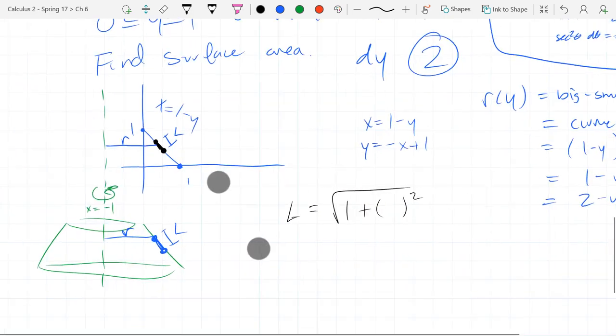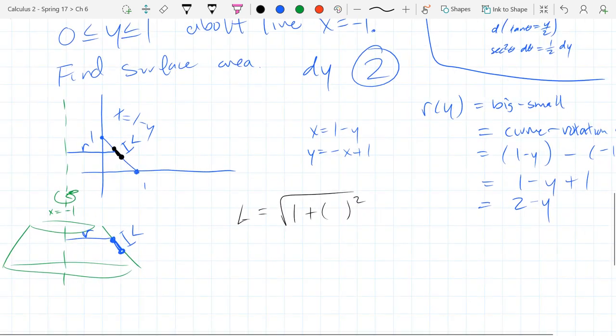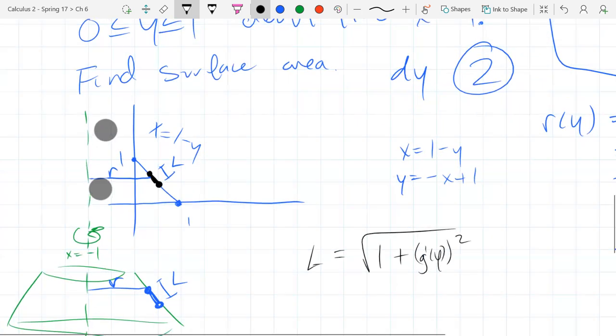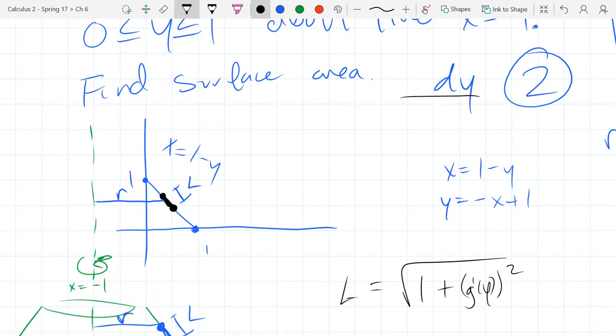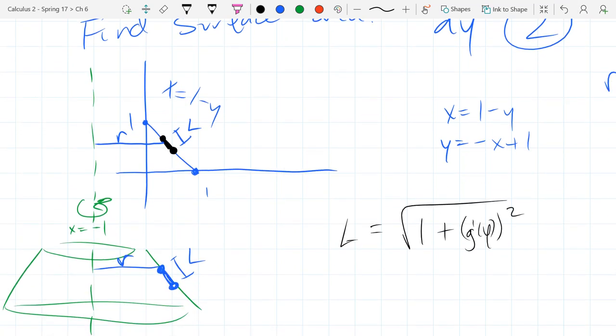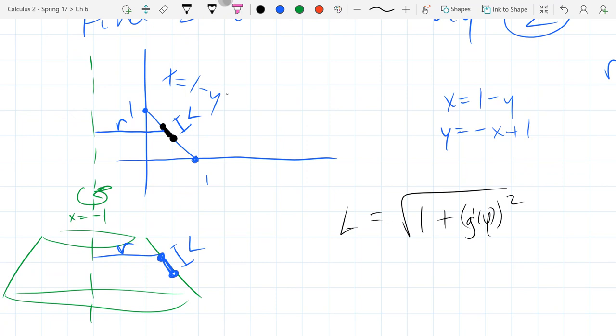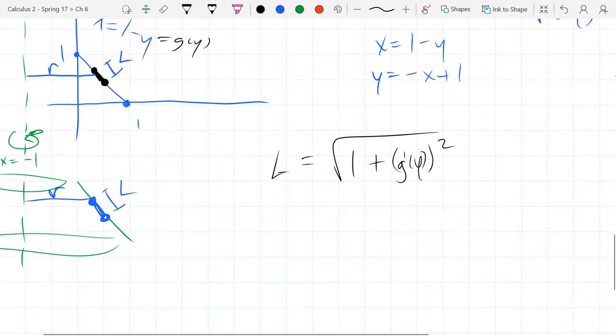So do I have a function of x or y? We got a dy integral, so I need to write it as g prime of y. My length function is a function of y. That was determined before when we determined our integral was a dy integral. Good news is we have a function of y already, so this is our g of y right here. All I need to do is take the derivative, that's the easiest derivative.